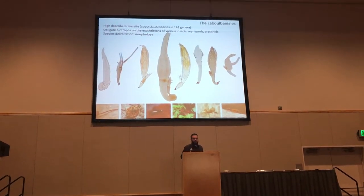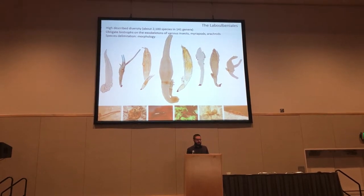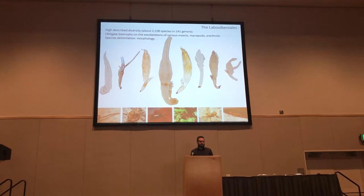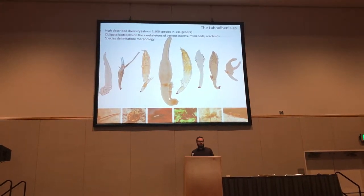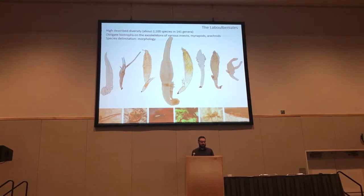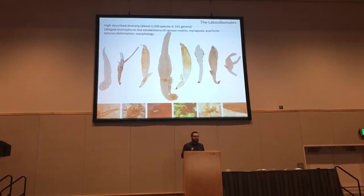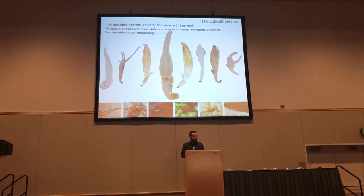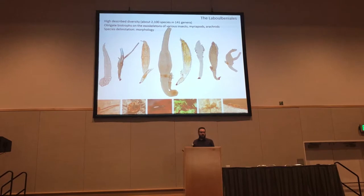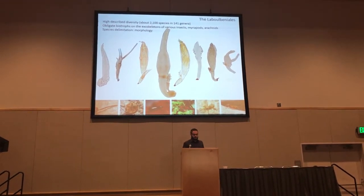The best-known order in this class is the order of Laboulbeniales. They have a highly described diversity — about 2,100 species are known — and all of them are obligate ectoparasites living on the exoskeleton of various insects, myriapods, and arachnids. Species delimitation is based on morphology, and indeed they have very variable, very diverse morphology as visible on these examples.